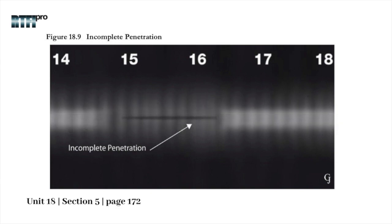Also known as lack of penetration or inadequate penetration, it is the region of incomplete filling of the weld root area, depicted by one or both of the weld joint lacking unity at the toe or toes of the root.